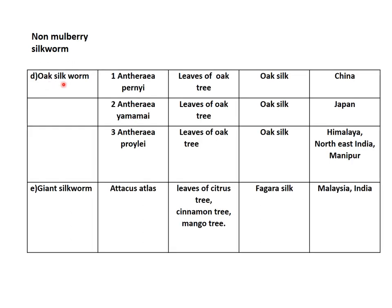Oak silkworm: based on distribution, there are three species of oak silkworm. All three species feed on the leaves of oak trees and produce oak silk. Antheraea pernyi is found distributed in China, Antheraea yamamai is found in Japan, and Antheraea proylei is found in the Himalayan region and Northeast India, especially Manipur.